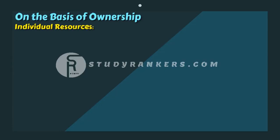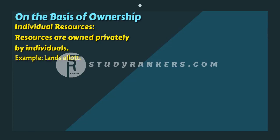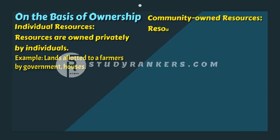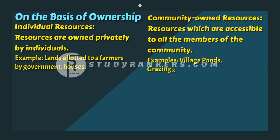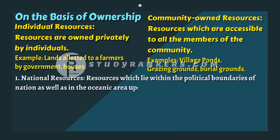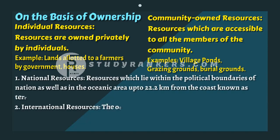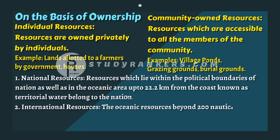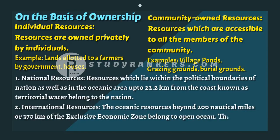On the basis of ownership, resources can be classified as individual, community, national and international. Individual resources are owned privately by individuals, for example plots and houses. Community owned resources are accessible to all members of the community, for example public parks and picnic spots. National resources are those which come under the nation — technically all resources belong to the nation. International resources are those lying beyond 200 kilometres of the exclusive economic zone in the oceans, and no one can use these without permission of international institutions.